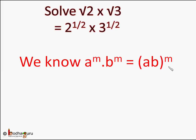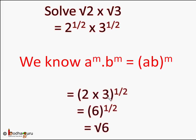b is equal to 3 and m is equal to 1 by 2. So square root of 2 into square root of 3 will be 2 into 3 whole to the power 1 by 2, which is 6 to the power 1 by 2, which is square root of 6 — because an exponent of 1 by 2 is the same as square root.